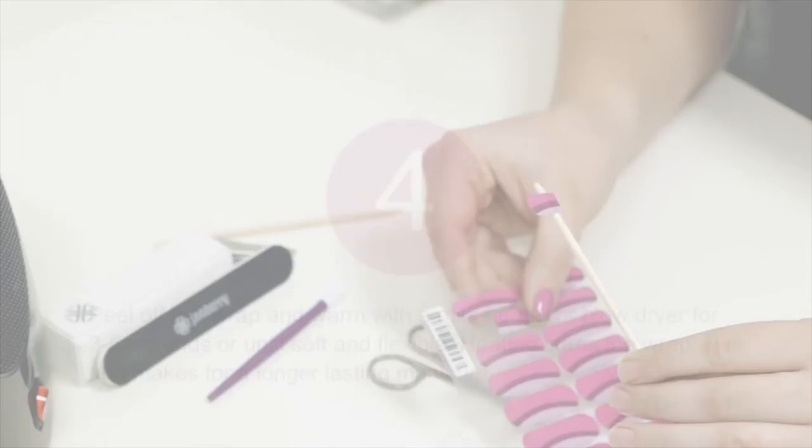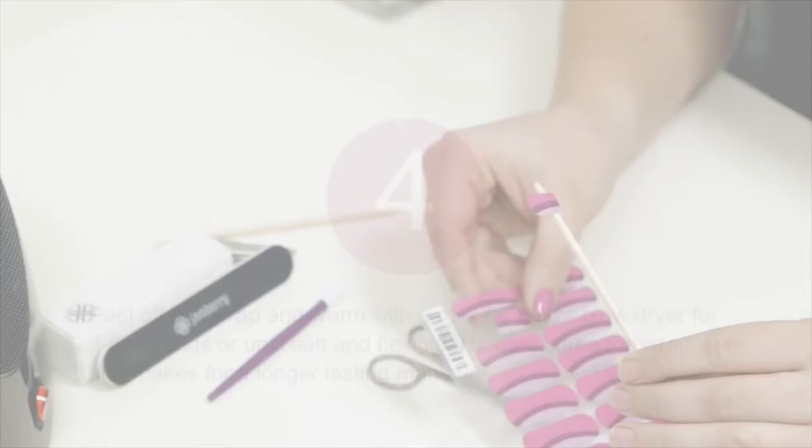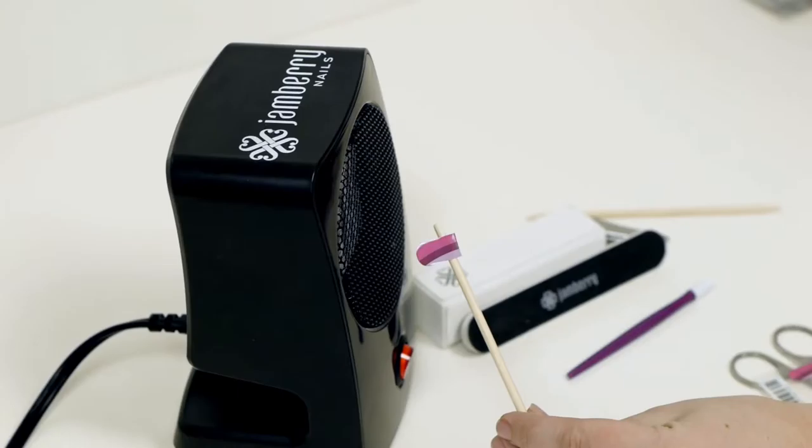Using your orange stick to hold the nail wrap, warm the adhesive side with a mini heater until soft and flexible. Depending on your heat source, this should take about three to five seconds.